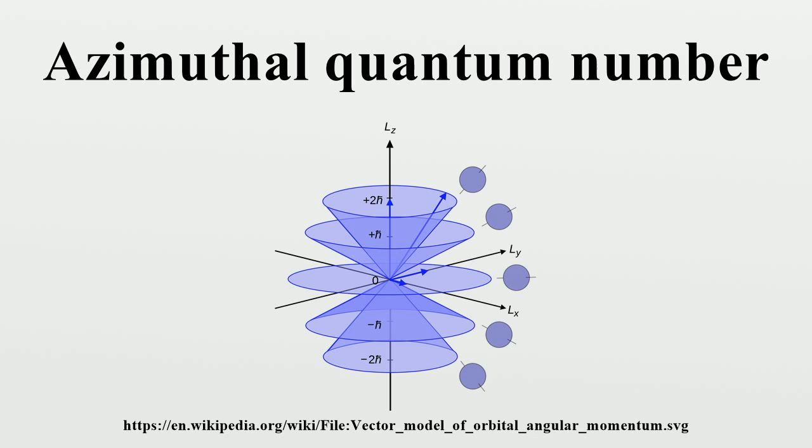The quantum number l is always a non-negative integer: 0, 1, 2, 3, etc. While many introductory textbooks on quantum mechanics will refer to L by itself, L has no real meaning except in its use as the angular momentum operator. When referring to angular momentum, it is better to simply use the quantum number l.